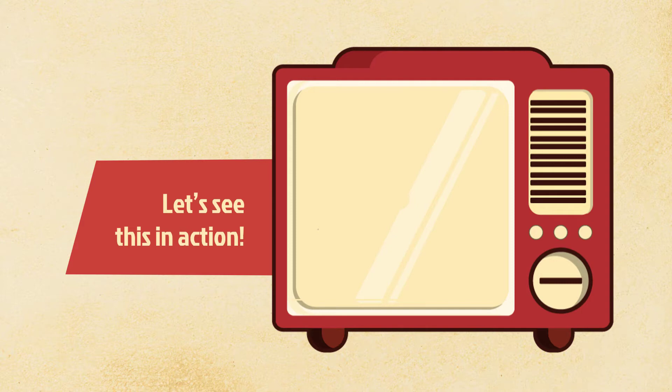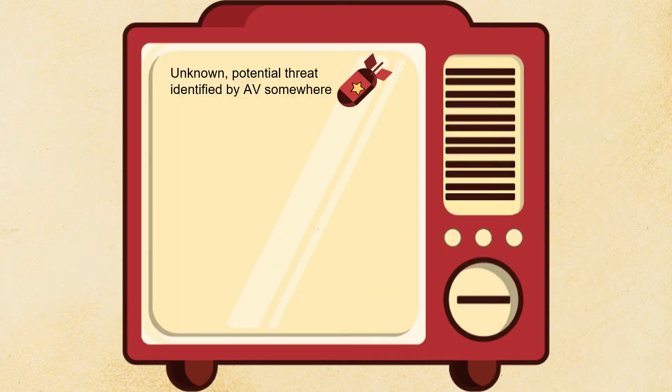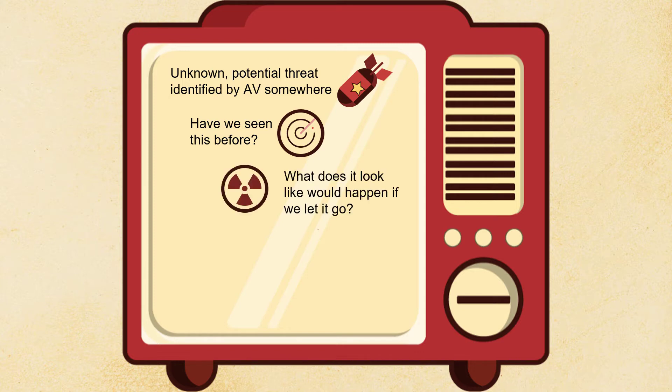Let's see this in action. To start out, we have an unknown potential threat identified by an antivirus program somewhere, and this is where our sandbox kicks in. It asks: have we seen this before? Is this familiar? Does it have a malware hash we think we've seen before? Does it match any existing definition? Next, we ask what would happen if we let it go — this is where you get into heuristics or code analysis, some kind of static analysis, asking if there's any part of this we recognize. Heuristics are subject to a lot of false positives, so most sandboxes have a filter to mitigate those.